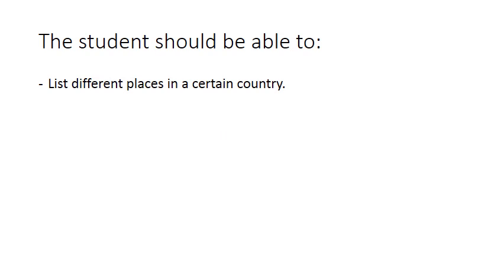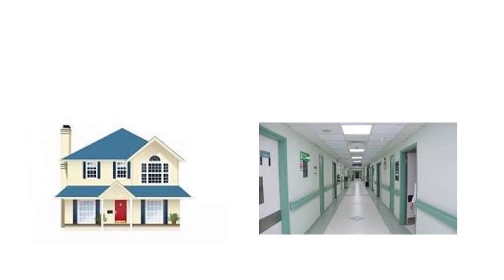Last week we covered the lesson on animal places, and we're going to list different places. Last week we took the lesson on places and we're going to identify certain places in our country, for example Lebanon, in the Arabic language.